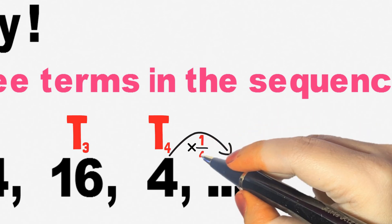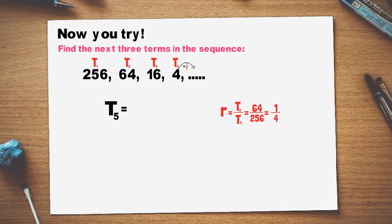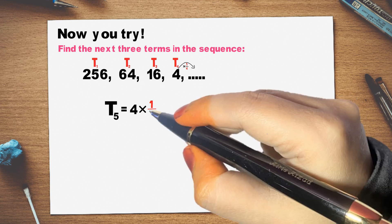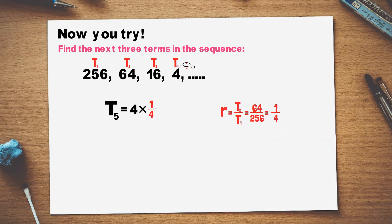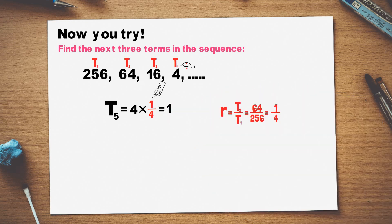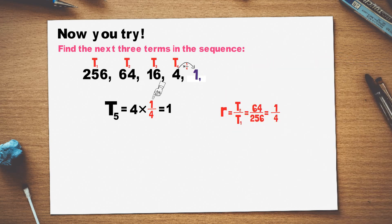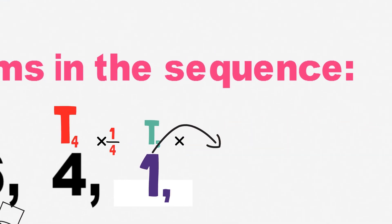We multiply by 1 over 5 to find the same number in the next one.